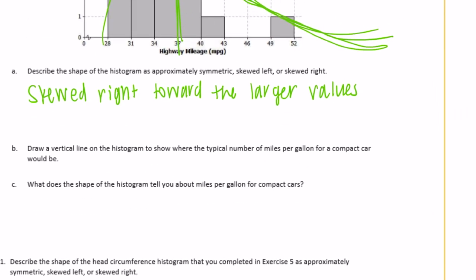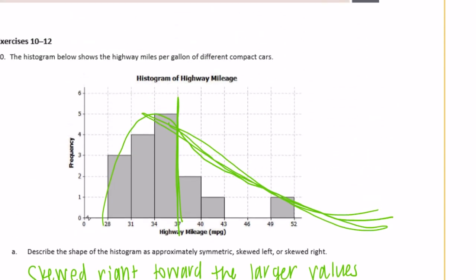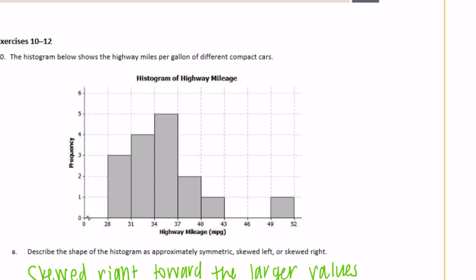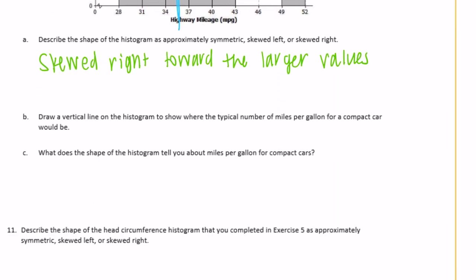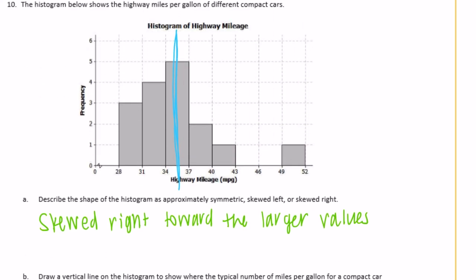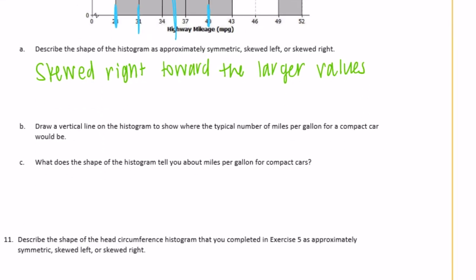Part B — draw a vertical line on the histogram to show the typical miles per gallon for a compact car. The center of the data looks to be around 35 or 36 miles per gallon. Part C — what does the shape tell you? Most cars get between about 31 and 40 miles per gallon. There was one car all the way out at 49 to 52 miles per gallon.